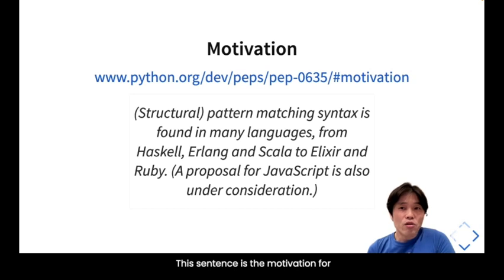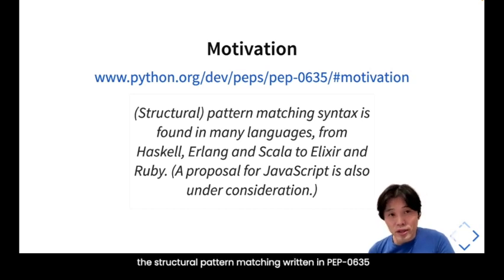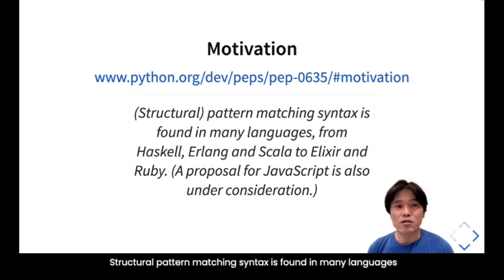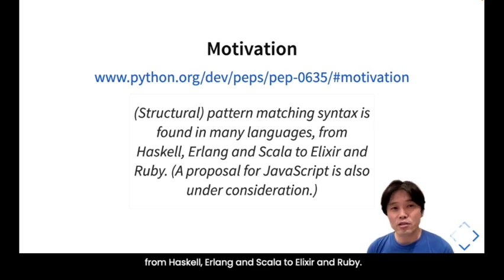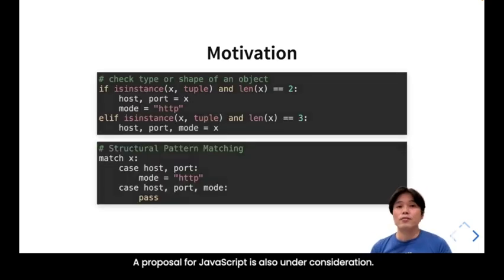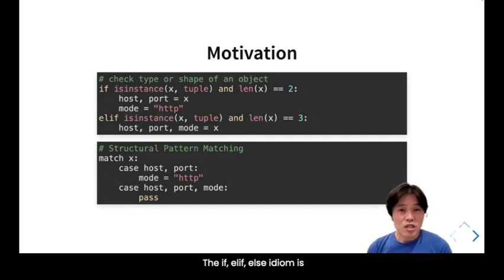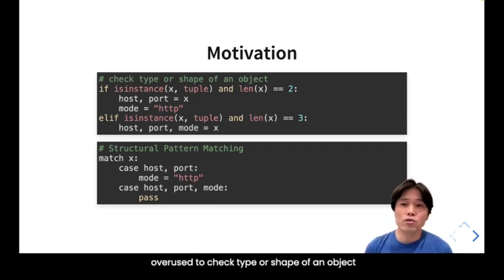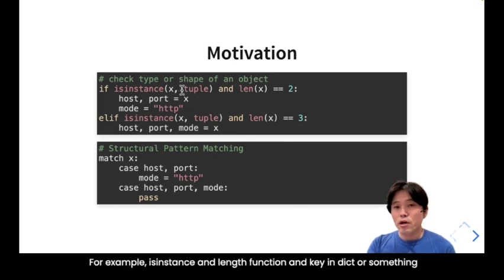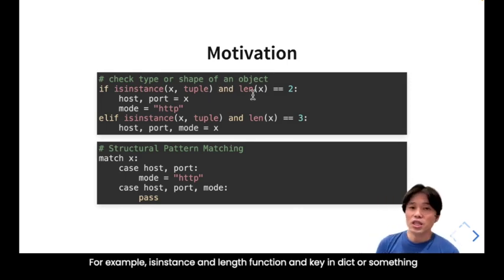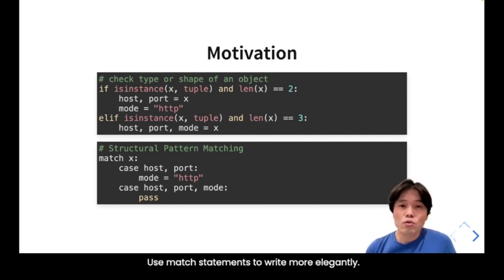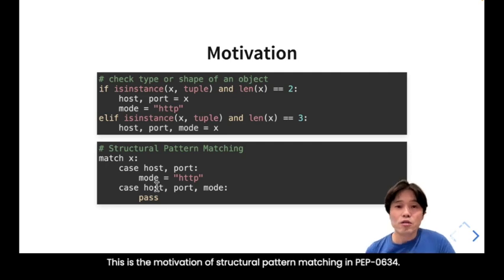The motivation for structural pattern matching is written in PEP 635. This syntax exists in many languages, from Haskell, Erlang, and Scala to Elixir and Ruby, and a proposal for JavaScript is also under consideration. The if-else idiom is often used to check the type or shape of an object — for example, isinstance, hasattr, len, and key-in-dict checks. You can use match statements to write this more elegantly.